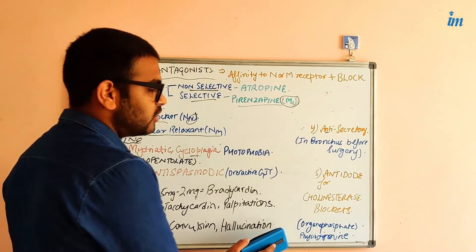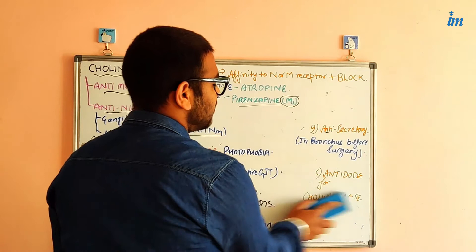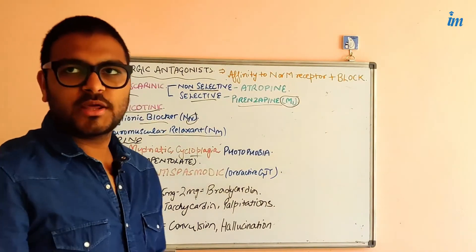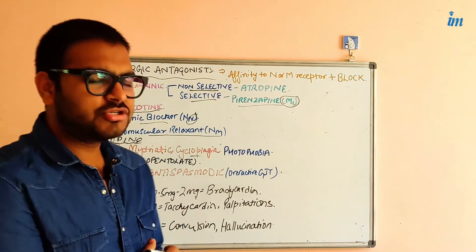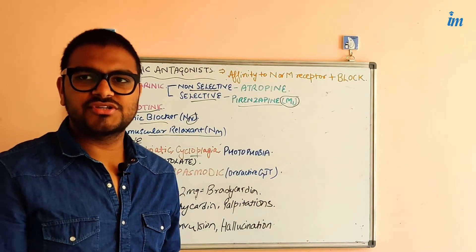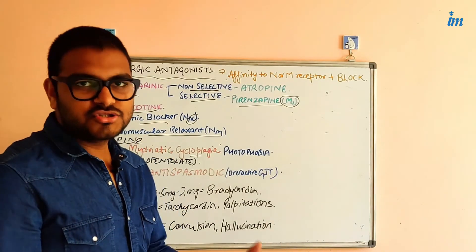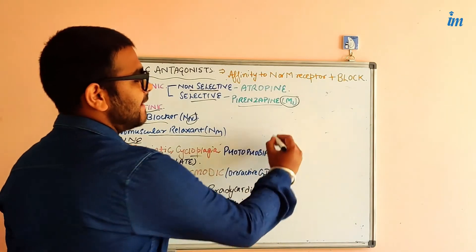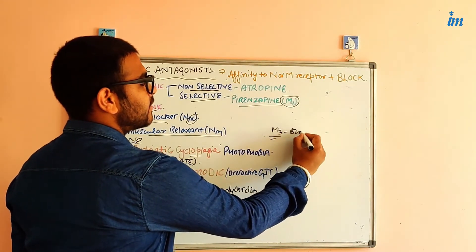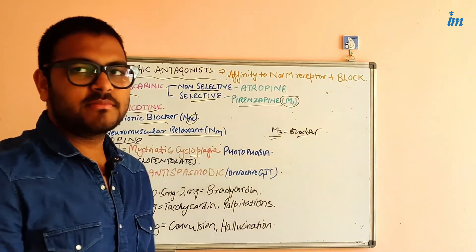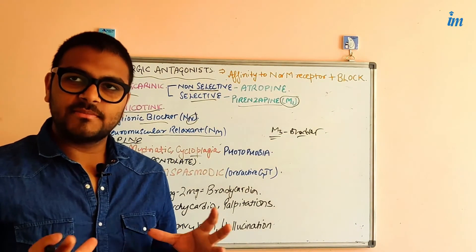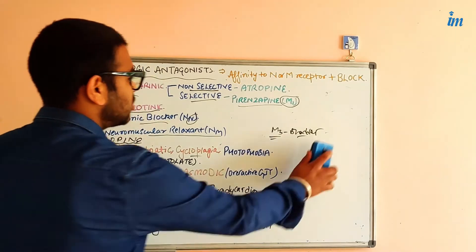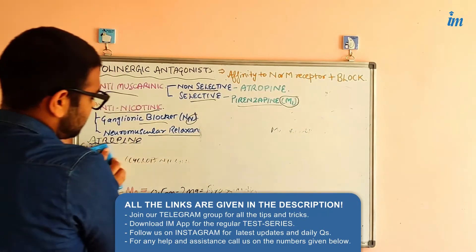The effect of atropine on the bladder: M3 receptors are present in the bladder. Normal cholinergic stimulation causes urination. In cases of overactive bladder, atropine blocks M3 receptors in the bladder, allowing urine to be retained for a longer period. This is the therapeutic benefit of atropine for overactive bladder.